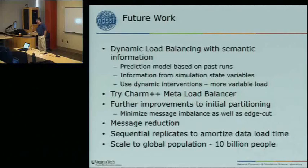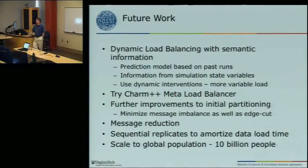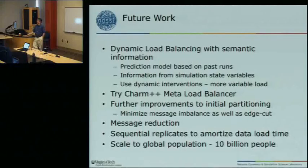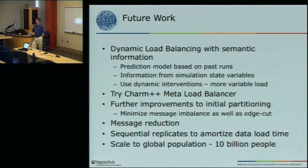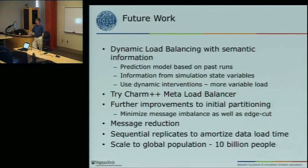From the audience: 'Have you looked at other graph partitioning libraries like Scotch that might optimize for different metrics, like maximum cut weight rather than average, or 95th percentile?' The speaker responds that they've looked into Scotch, but it doesn't support multi-constraint partitioning, which limits its usefulness here. That said, it's definitely something they'd like to investigate further, though it's a challenging problem.